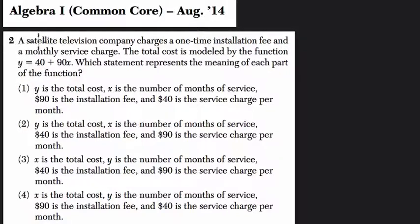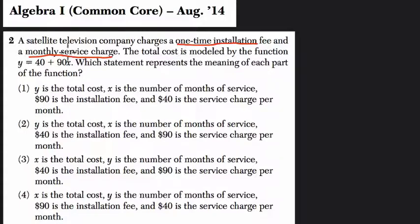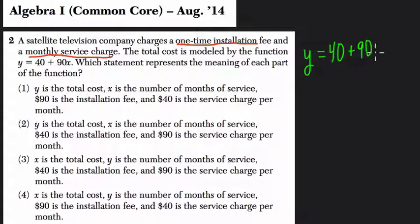So what are we told? We're told a satellite television company charges a one-time installation fee and a monthly service charge. We know there's this one-time installation fee — they come and install stuff, and then every month you pay a little bit extra. The total cost is modeled by the function. Here's our function: y is equal to 40 plus 90x.